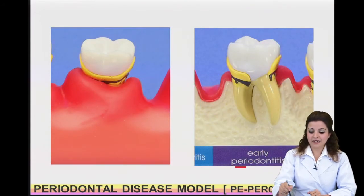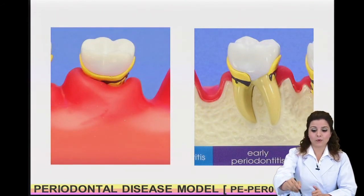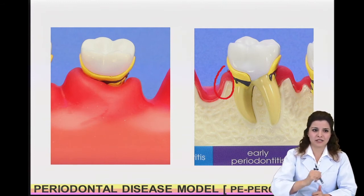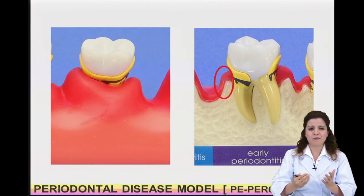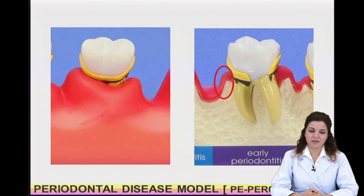At early periodontitis, you can mention the red and swollen gingiva and some pathological changes that have already started in the bone.